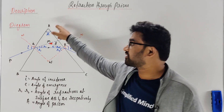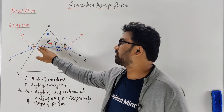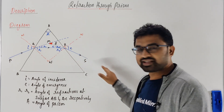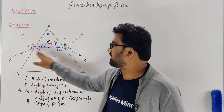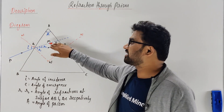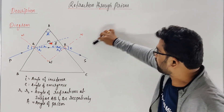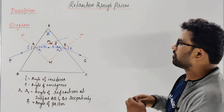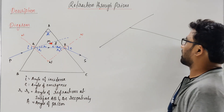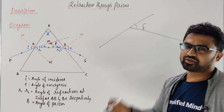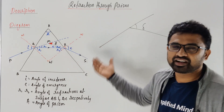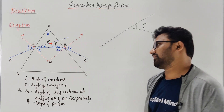Because of the presence of the prism, the ray underwent two refractions and then went in a different direction. So there is a deviation — how much the ray got deviated from the incident ray's original path. That's called deviation.